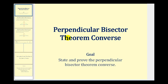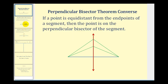Welcome to a lesson on the Perpendicular Bisector Theorem Converse. The goal is to state and prove the Perpendicular Bisector Theorem Converse. This converse tells us that if a point is equidistant from the endpoints of a segment, then the point is on the perpendicular bisector of the segment.